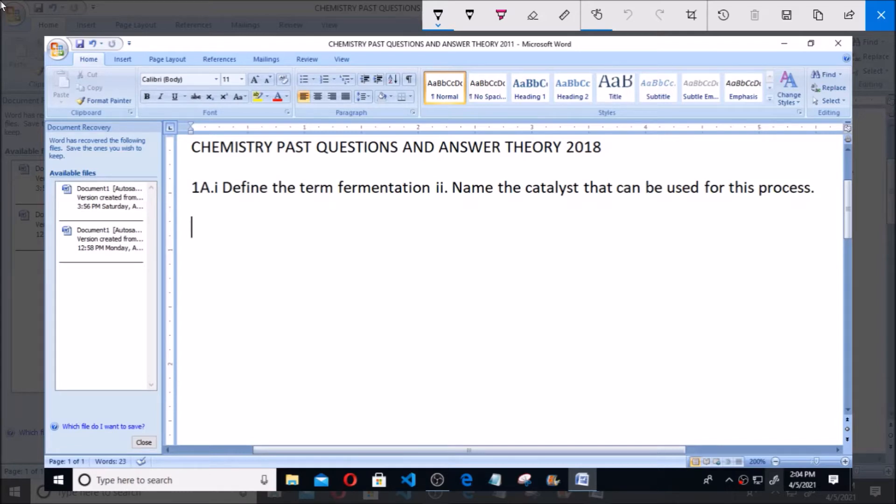Fermentation is the conversion of aqueous glucose (that is sugar) to ethanol and carbon dioxide by the enzyme zymase in yeast. The enzyme zymase in yeast serves as catalyst. The equation of the reaction is as follows: C6H12...